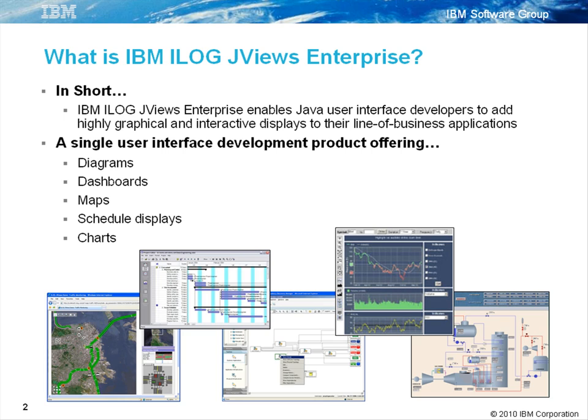The types of displays that can be built with JVs Enterprise are all highly graphical. There are five different types of displays: diagrams, dashboards, maps, schedule displays, and charts. The images on this slide are some examples. Now let's look at examples of each of these types of displays.